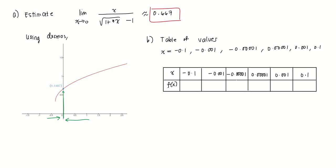When x equals negative 0.1, the value of the function is approximately 0.61222. When x is negative 0.001, the value of the function is approximately 0.666166.